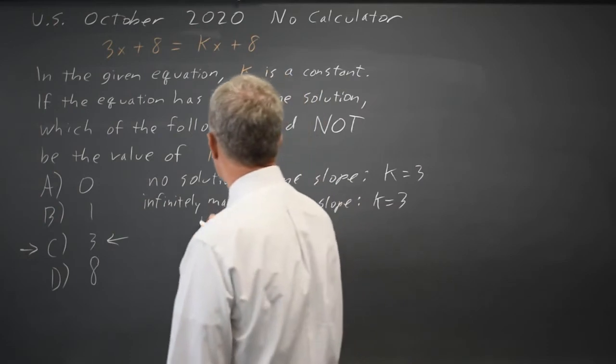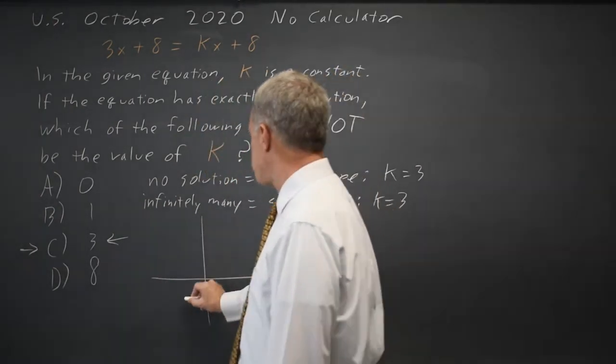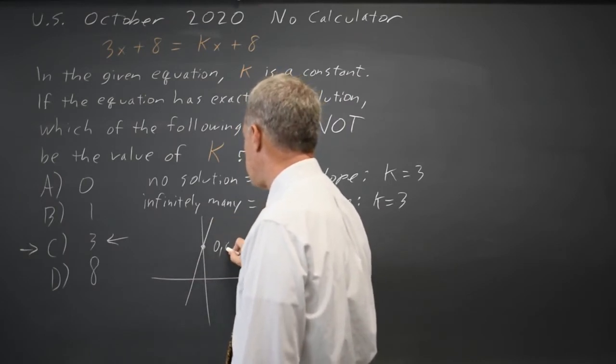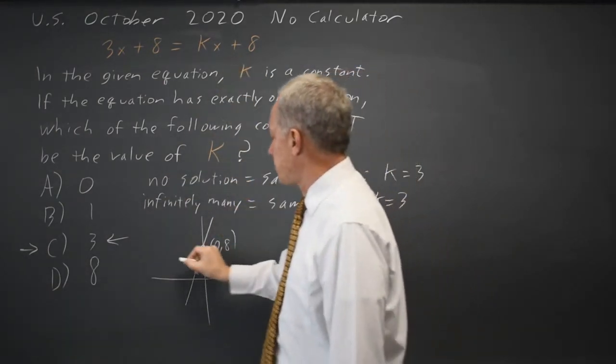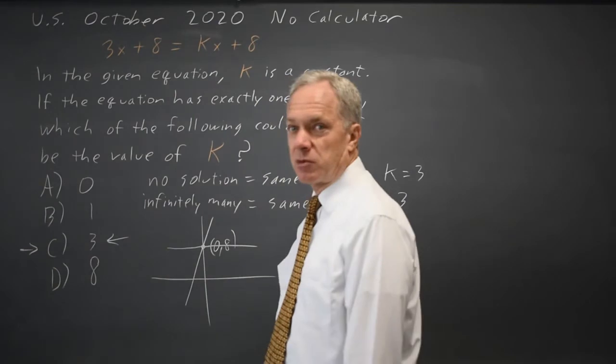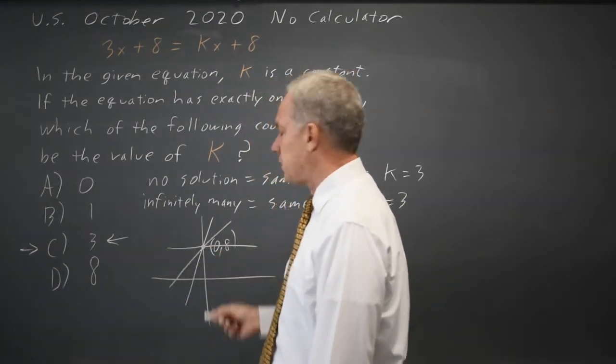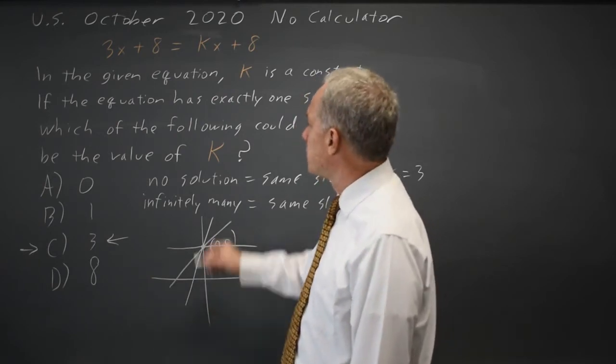Alternatively, you can graph this. I'm not going to put a lot of time into it, but 3x plus 8 has a steep slope and a y-intercept of 8. If k equals 0, 0x plus 8 is just a horizontal line that intersects in one point. If k equals 1, that's the line of slope 1. Again, it intersects at the y-intercept. 3x plus 8, if k equals 3, is the same line.